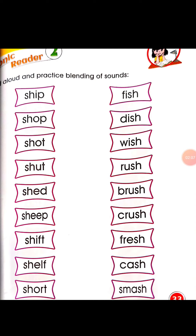Page number 33. Now read aloud and practice blending of sounds. Some 'sh' words are given for the starting sound and half 'sh' words for the ending sound. Let's see: sha-ip — ship.